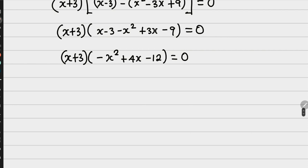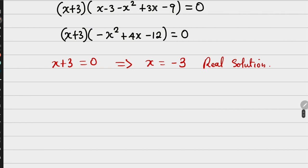Now having this, it means that I can have x plus 3 is equal to 0, which implies that x is equal to minus 3. This is a real solution. Then, let's go over to the other side, which we can say minus x squared plus 4x minus 12 is equal to 0. Can we actually work out this?